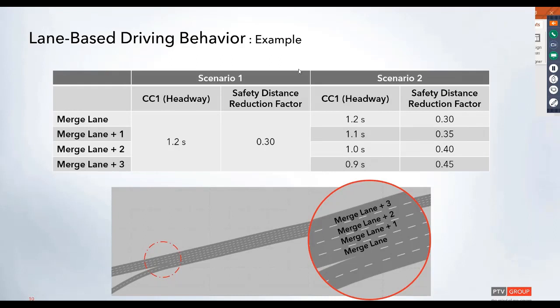In this example, we're looking at two different scenarios. Our first scenario is going to have the setup where all of the lanes have the same driving behavior. The second scenario will have different behaviors based on those individual lanes. In this case, we're just going to look at two different driving behavior parameters.